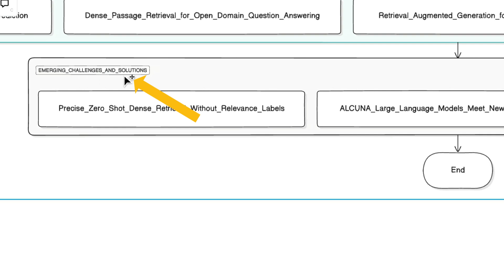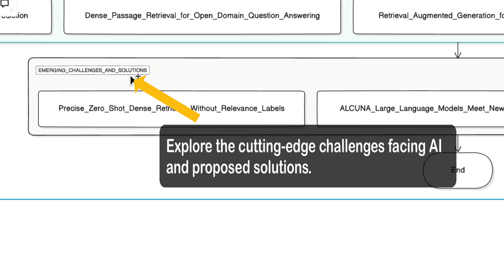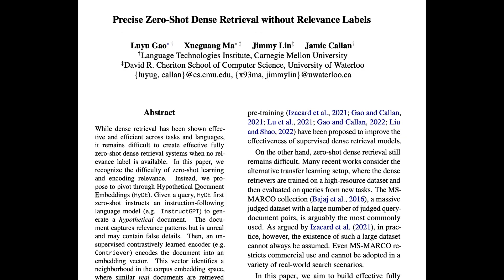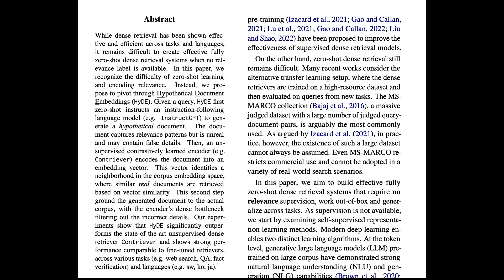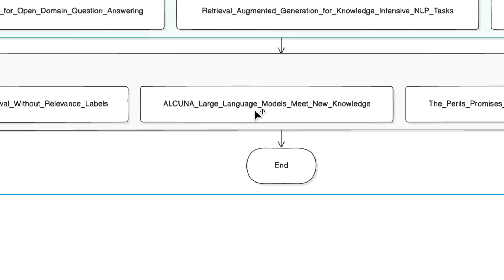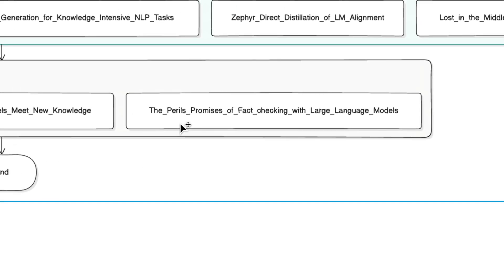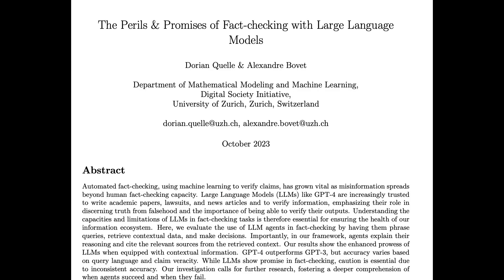Lastly, we have Emerging Challenges and Solutions, exploring cutting-edge challenges facing AI and proposed solutions. The first paper is 'Precise Zero-Shot Dense Retrieval Without Relevant Labels' — advanced information retrieval without manual labeling. Then 'Alcuna: Large Language Models Meet New Knowledge,' understanding techniques for incorporating new knowledge into pre-trained LLMs, which helps you understand fine-tuning principles. And 'The Perils and Promises of Fact-Checking with Large Language Models,' exploring the potential and limitations of using LLMs for fact-checking.